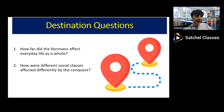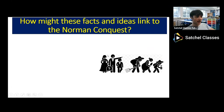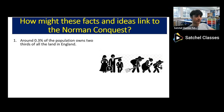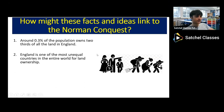We're going to start with destination question two — the idea of different impacts on different people. Here's a challenge: consider how these facts link to the Norman conquest. Fact one: around 0.3% of the population owns two-thirds of all land in England. Think about that — 0.3% owning around 66% of all the land, making England one of the most unequal countries in the world for land ownership.